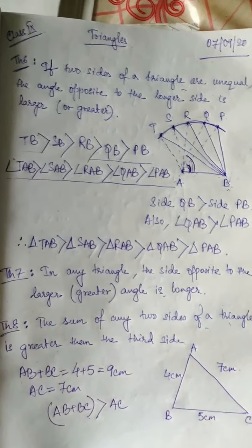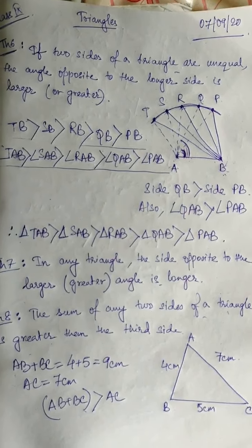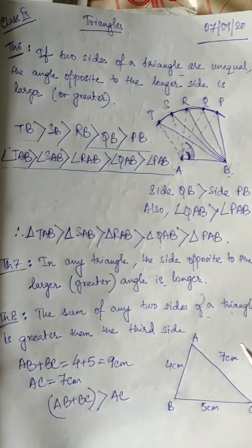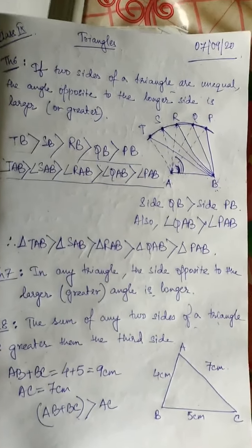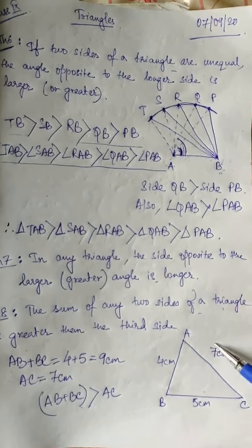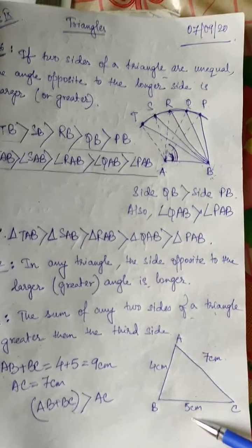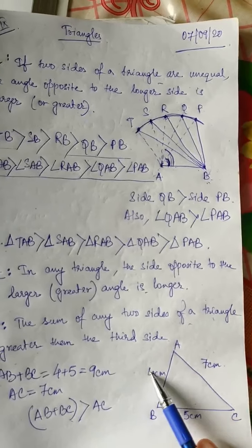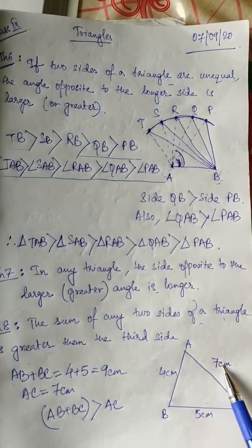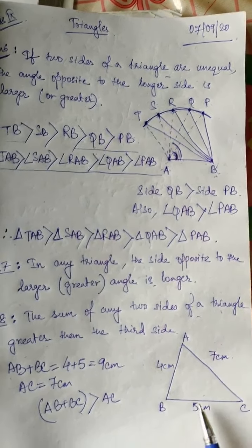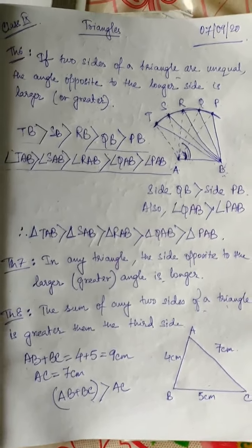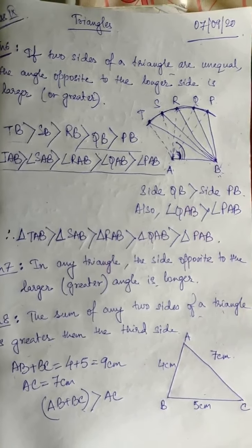So if I add any two sides that are not the greatest side, those two sides will be greater than the third side. Also if I add the other two sides, like 7 and 5, that gives 12 cm, which is definitely greater than the third side. And if I add 7 plus 4, that becomes 11 cm, which is greater than 5 cm. So the sum of any two sides of a triangle is always greater than the third side.